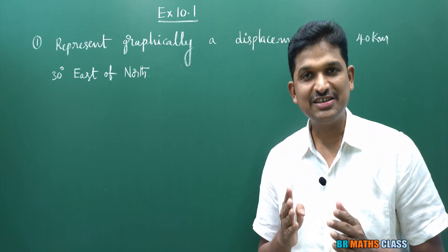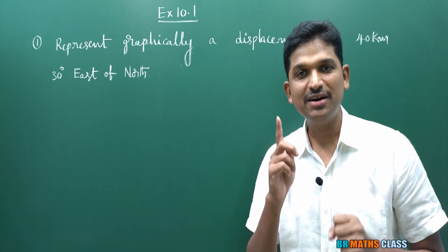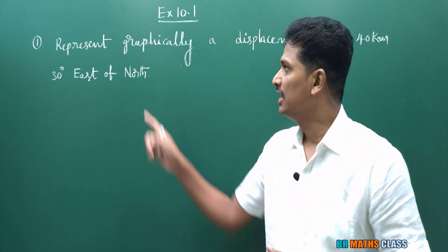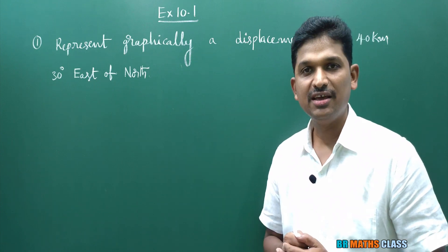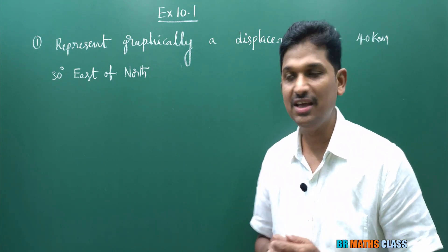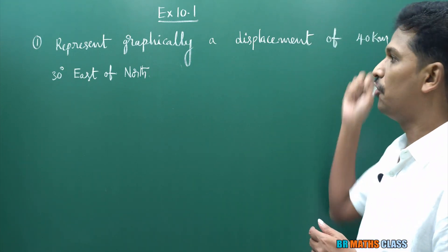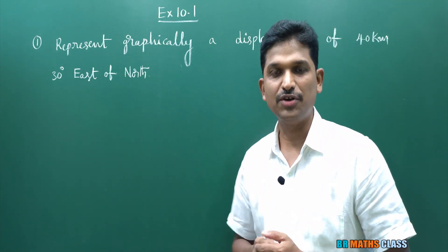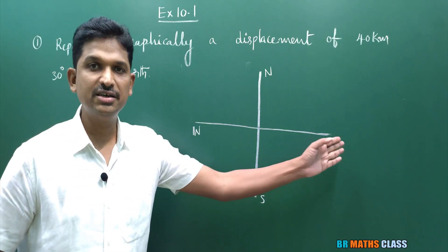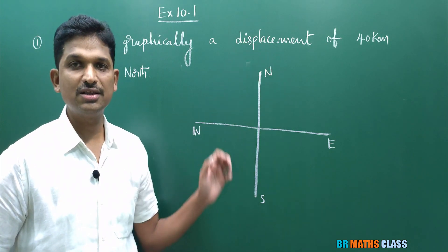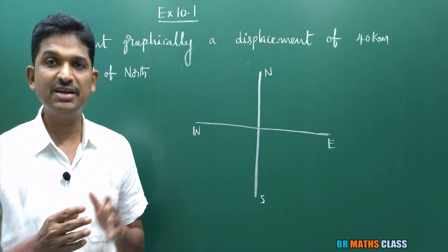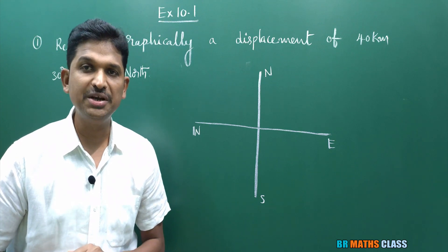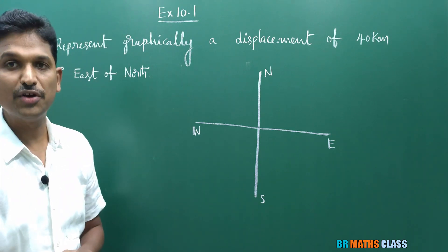The first question in exercise 10.1: Represent graphically a displacement of 40 kilometers, 30 degrees east of north. I consider east, west, north, and south directions.